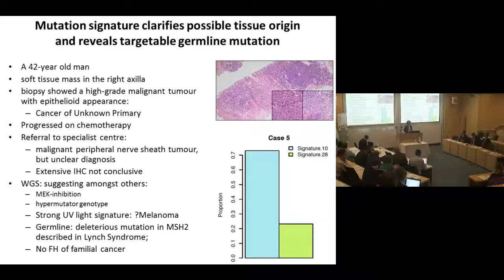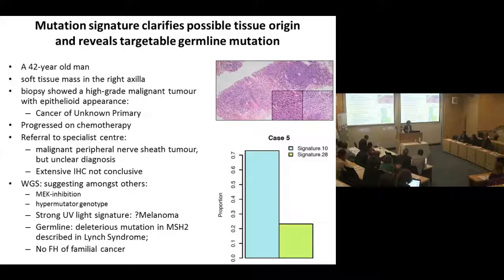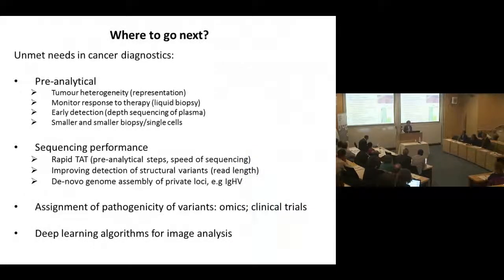The last example is a patient with a cancer of unknown primary, where it wasn't clear what the underlying tissue of origin was — obviously very important when it comes to treatment. This patient turned out to have a UV light signature in the genome, indicating that the origin of the cancer was not the sarcoma originally suggested by the pathologist, but was probably a malignant melanoma. This again highlights the importance of complex and global mutation signatures in cancer diagnosis.